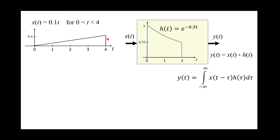The impulse response of the system is h(t). You can think of the impulse response as if we excite the system by a high voltage for a short period of time — then this will be the output of the system, if it's an electrical system. Or you can think of it as a mechanical system where you are exciting the system by a strong force or vibration for a short period of time, then this will be the output of the system, which we call the impulse response.